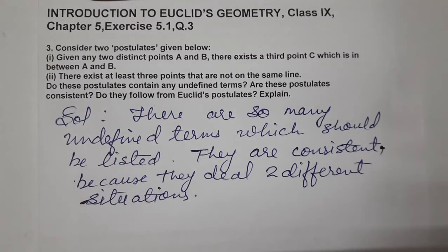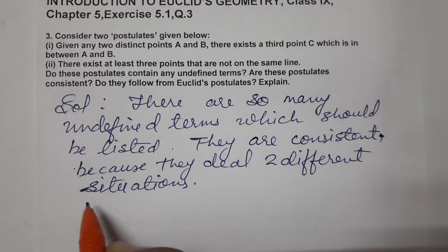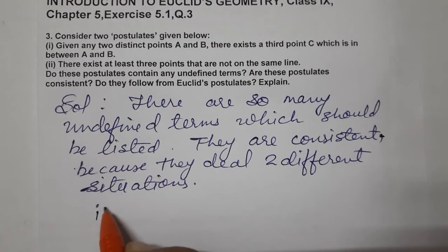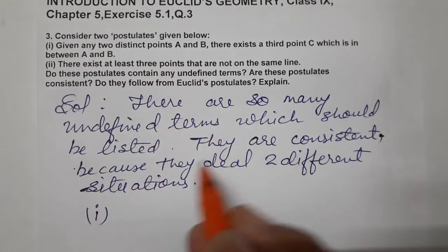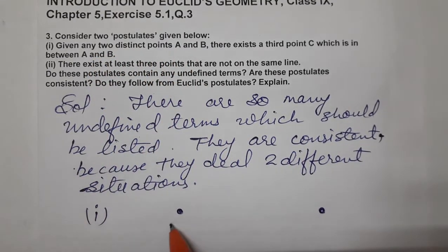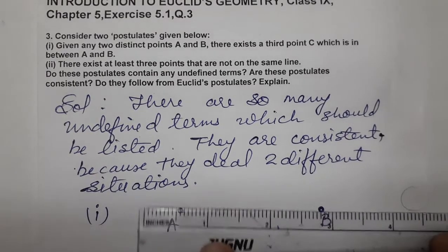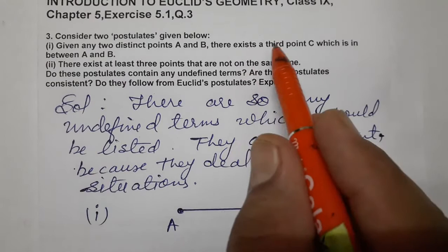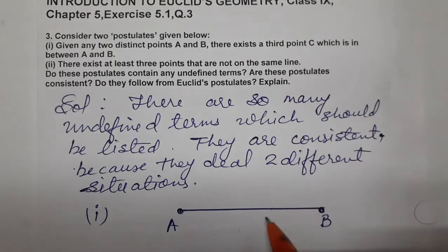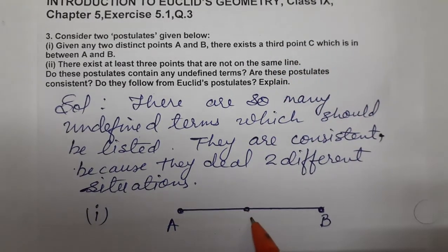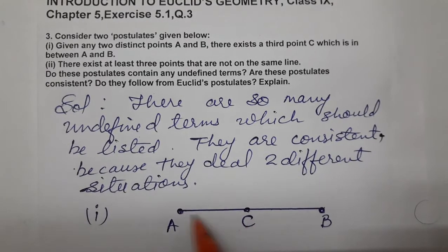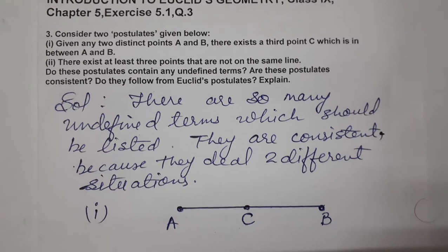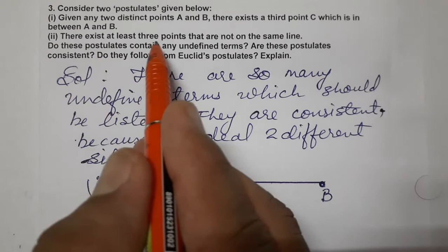See the first one: the first postulate says — given any two distinct points A and B, let's take two distinct points A and B and join them. There exists a third point C which is in between A and B — let's take point C, and this point lies between A and B.